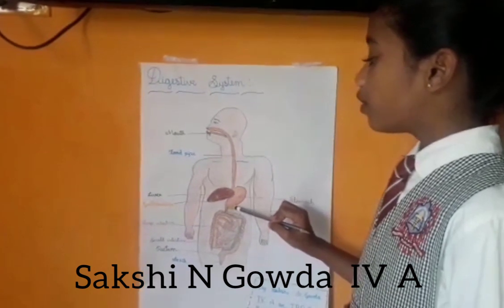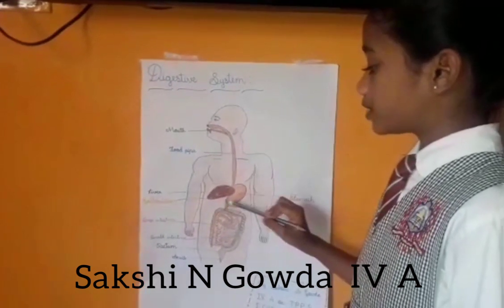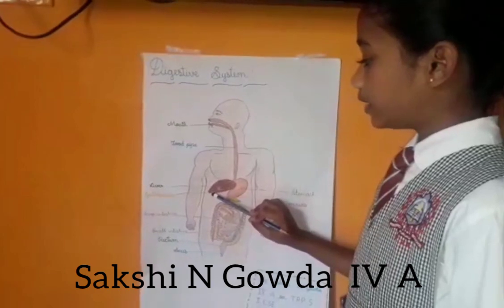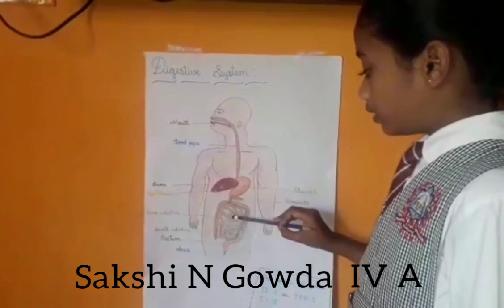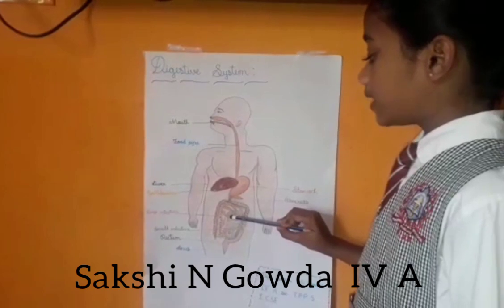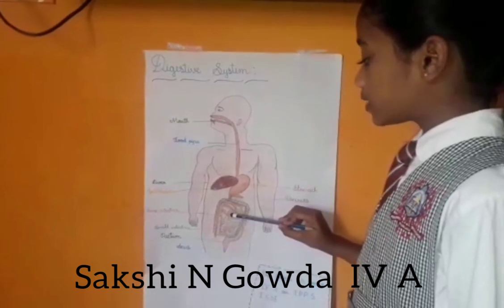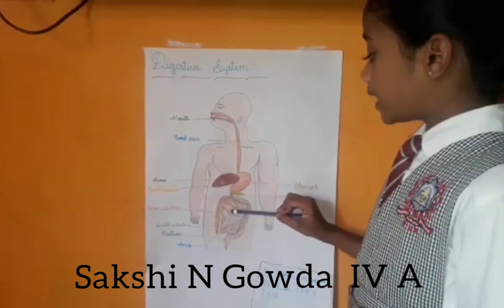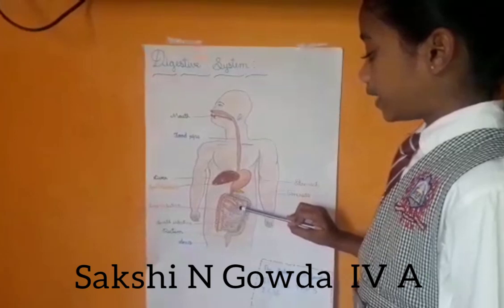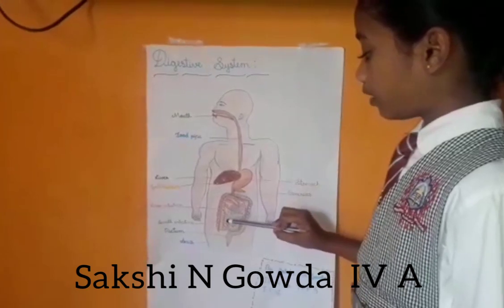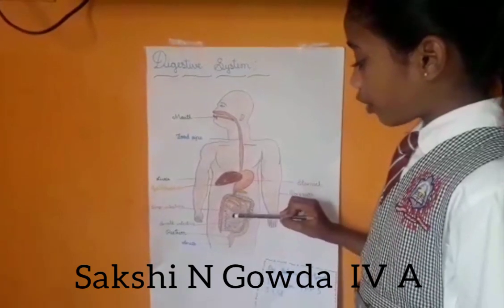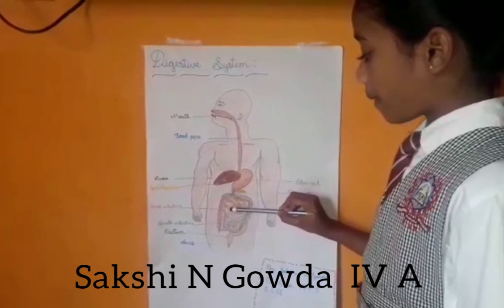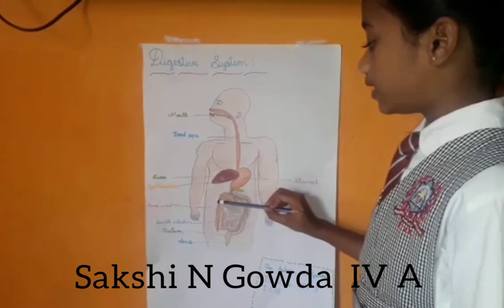Liver and pancreas are used to produce digestive juices. The green part near the liver is called the gallbladder. Small intestine: Inside the small intestine, the digestive process is completed and it absorbs the food and nutrients into our body.